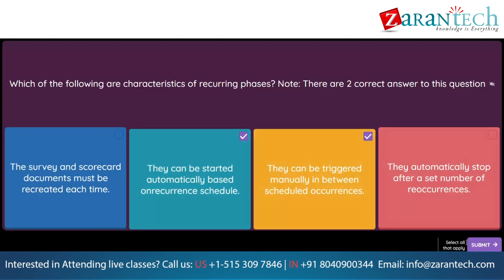Question. Your customer needs to prevent suppliers from participating in sourcing events until they are qualified in the corresponding category. Which SAP Ariba supplier management solution do you suggest? Option 1: SAP Ariba Supplier Risk. Option 2: SAP Ariba Supplier Information and Performance Management. Option 3: SAP Ariba Supplier Lifecycle and Performance. Option 4: SAP Ariba Supply Chain.